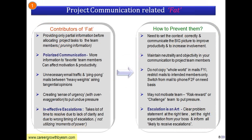Now let's get into the first factor: project communication fat. On the left side you can see the contributors to this fat and how to prevent each type. One issue is providing only partial information before allocating project tasks to team members — pruning information. Some people feel they don't need to give all the information to all team members, so they split it: first paragraph to Mr. X, second paragraph to Mr. Y, resulting in unequal information distribution.